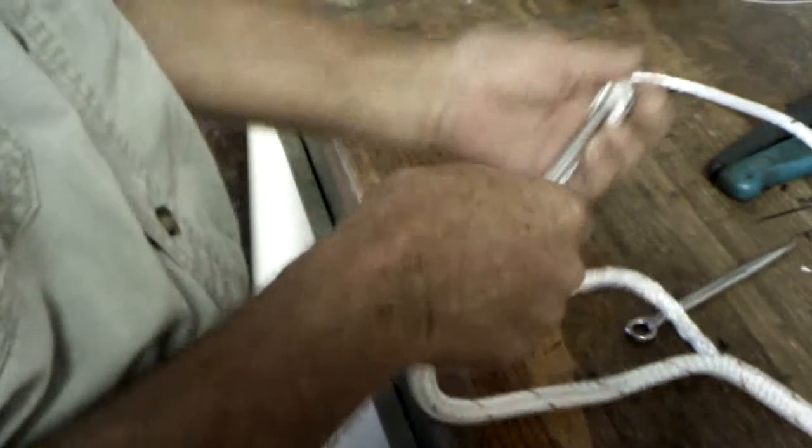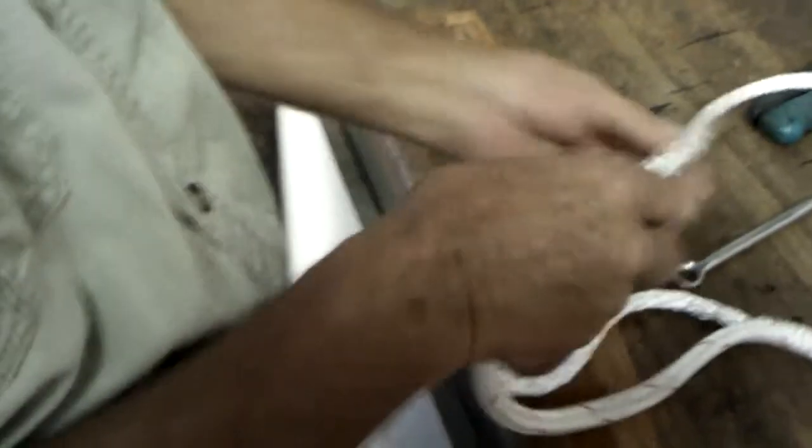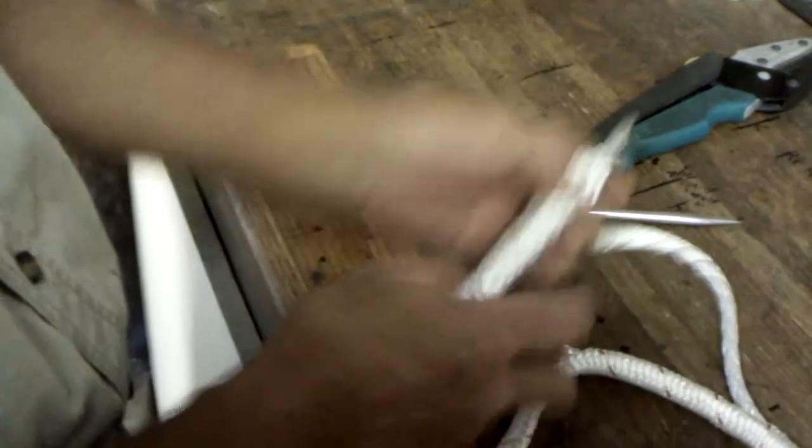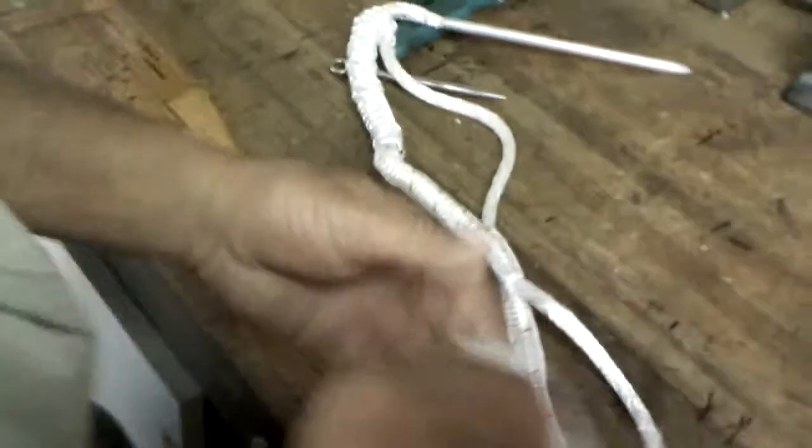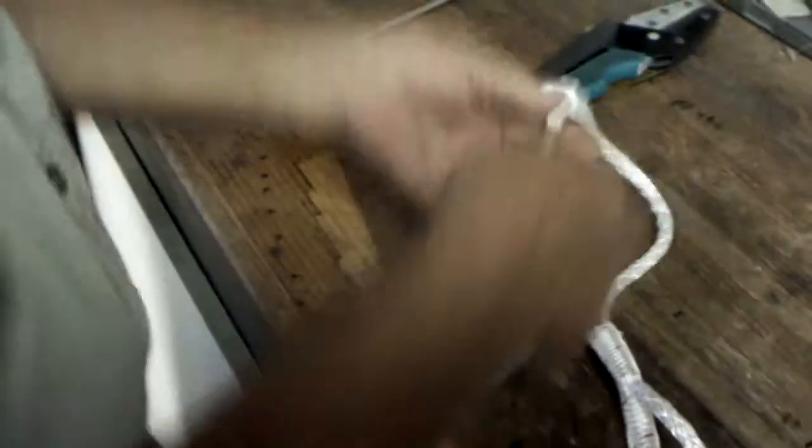And now we are going to take the jacket into the core. Into the first line, out of the second. And you want to make a nice crossover. Very tight.